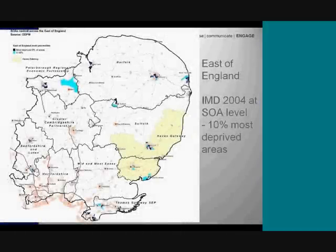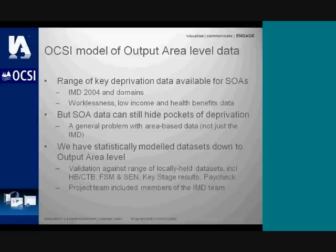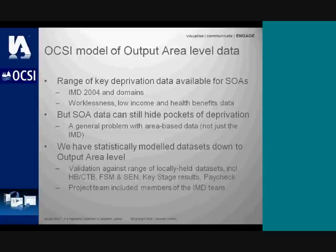As part of the work with the Norfolk Rural Community Council, we developed a model down to output area level. Super output areas cover about 1,500 people — fairly fine grain — and there are about 32,000 of them across England. Output areas are finer again: there are about five output areas per super output area, covering around 300 people. We statistically modelled the data down to output area level — the methodology is available on the web.